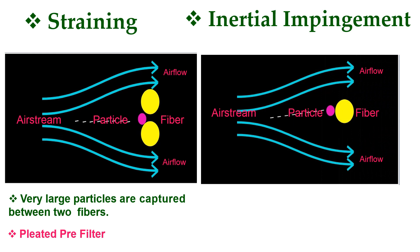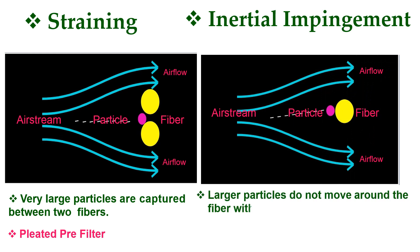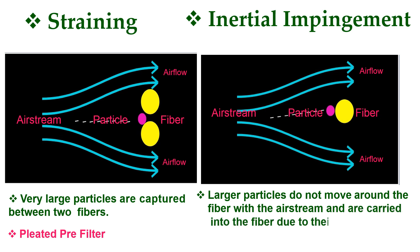The next method is inertial impingement filtration. As shown on the right-hand side, larger particles do not move around the fiber with the airstream and are captured on the fiber. An example of an inertial impingement method filter is the flat panel pre-filter.